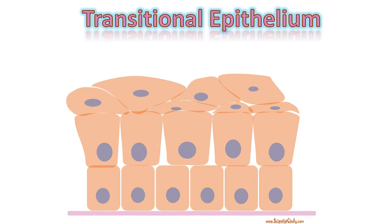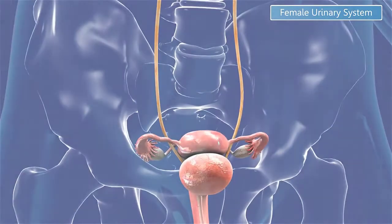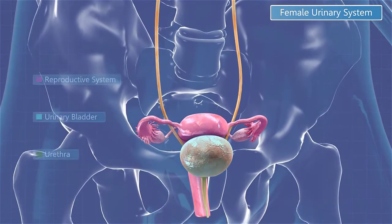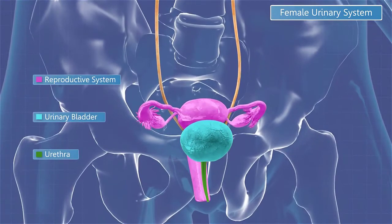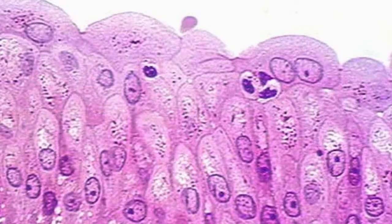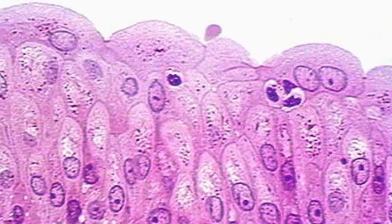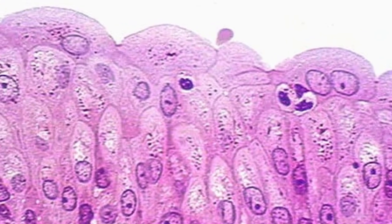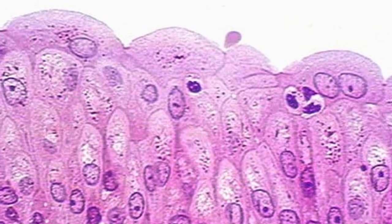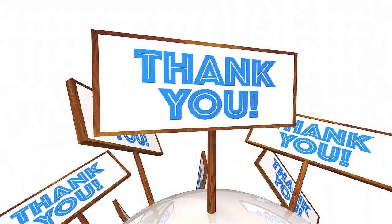Transitional epithelium is found in tissues that stretch, such as the bladder. Here we see a definite change in shape of cells as you continue toward the apical surface. Thank you for watching!